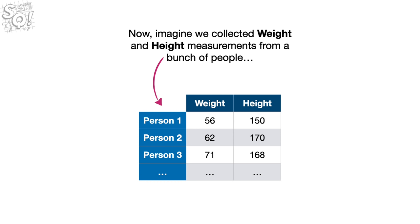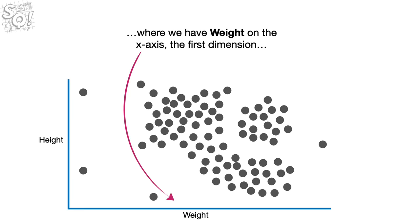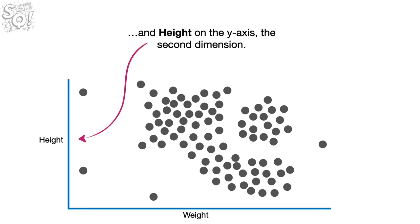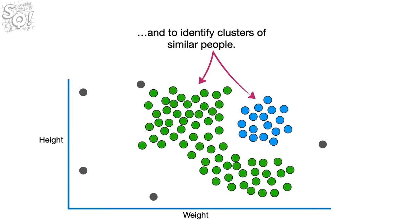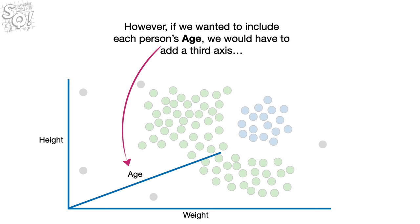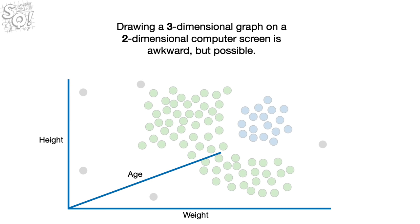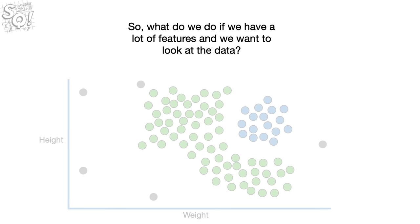Imagine we collected weight and height measurements from a bunch of people and plotted them on a two-dimensional graph, with weight on the x-axis and height on the y-axis. Seeing the data can be useful to identify outliers and clusters of similar people. However, if we wanted to include each person's age, we'd need a third axis, making a three-dimensional graph. And if we wanted even more features, we'd need four or more dimensions, which is not possible to draw.